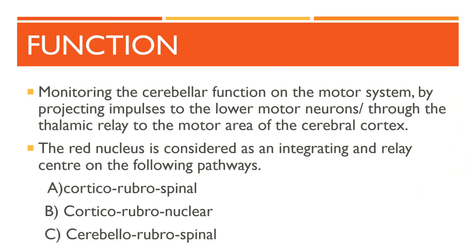The functions of the red nucleus include monitoring cerebellar function on the motor system by projecting impulses to the lower motor neurons or through thalamic relay to the motor area of the cerebral cortex. Simply put, the red nucleus is an integrating and relay center — just like a station — on the corticorubrospinal tract and the cortico-rubro-nuclear tract.